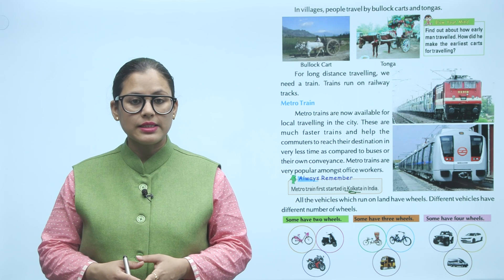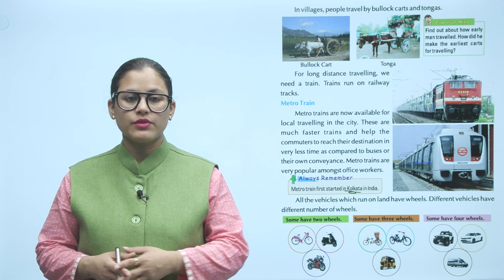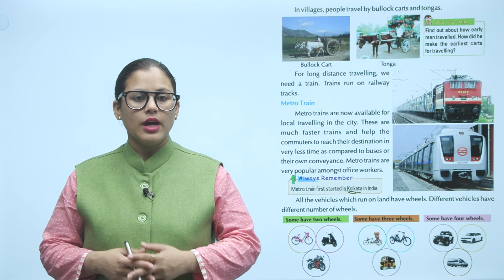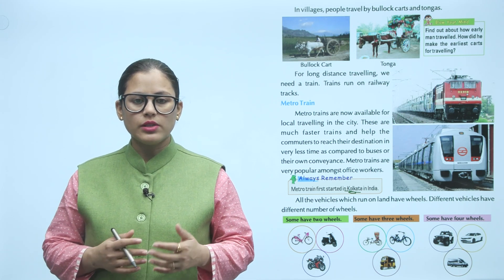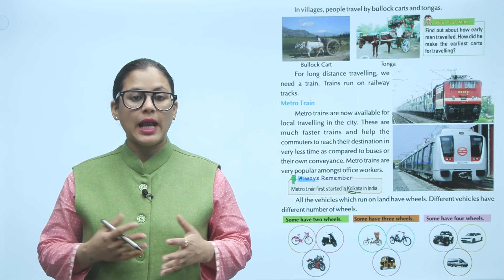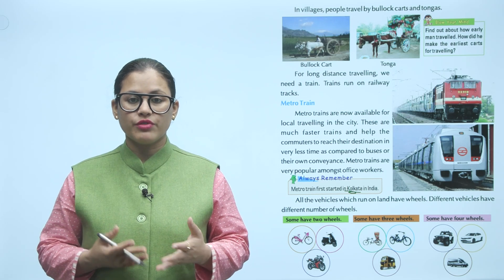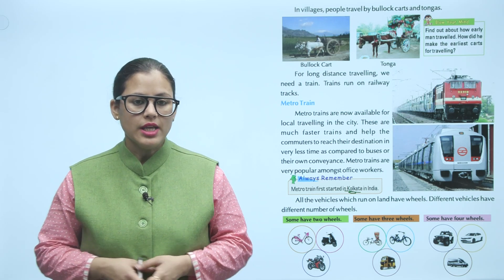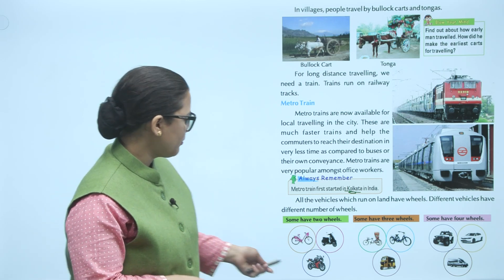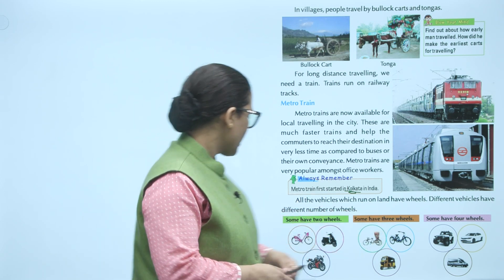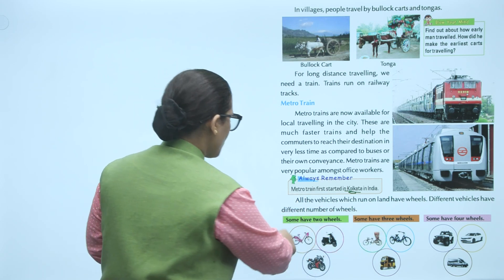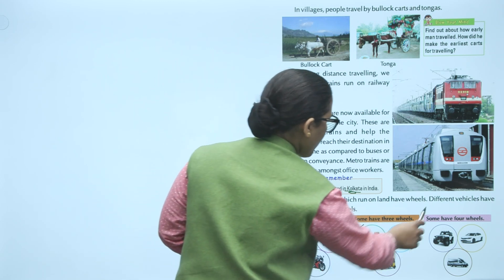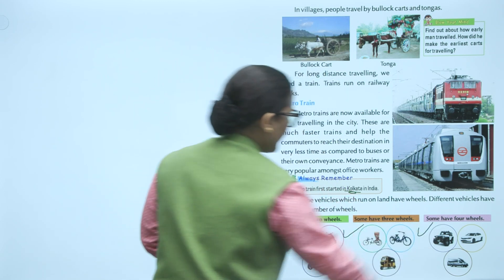All vehicles that run on land have wheels, and different vehicles have different numbers of wheels. For example, some vehicles have two wheels, some are three-wheelers, and some are four-wheelers.